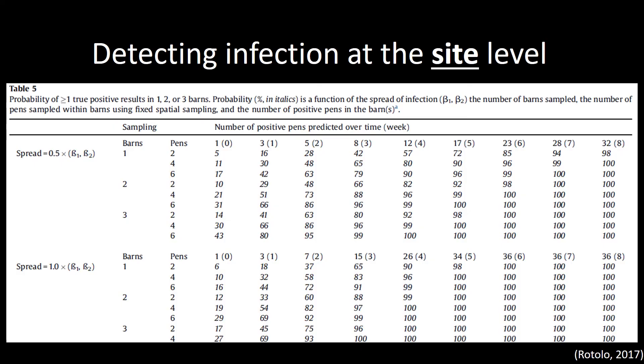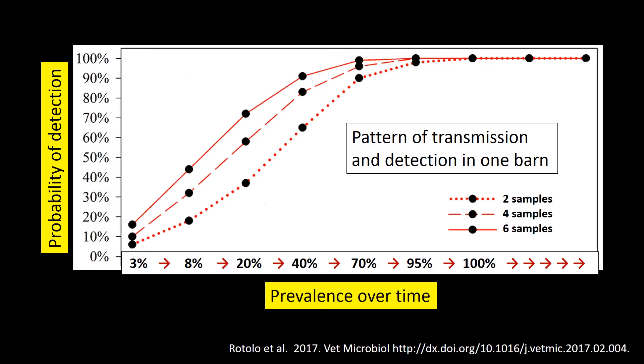Using this equation, Dr. Rotolo constructed a table that can be used to estimate the probability of detection in more than one barn. Let's look at the probability of detection in a three barn site with five positive pens in each barn. If the producer collects two samples in each barn, their probability of detecting infection at the site level is 63%. For four samples in each barn, the site level probability is 86%. For six samples, the site level probability is 95%. However, remember the benefit of consistent sampling. Because pathogens are contagious and prevalence changes over time, consistent sampling will quickly reveal the presence of infection.